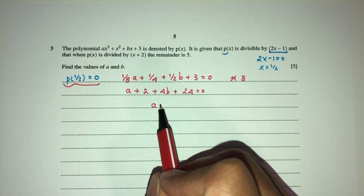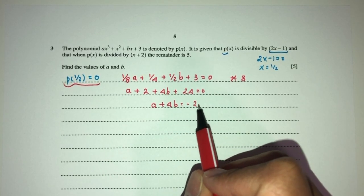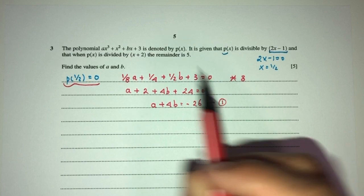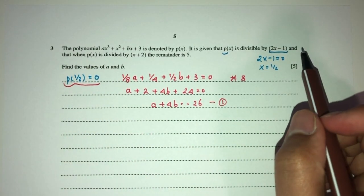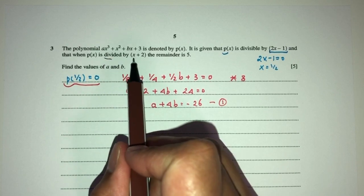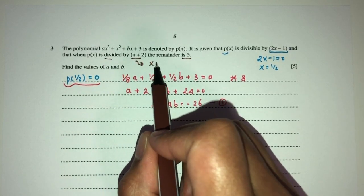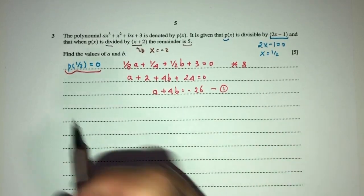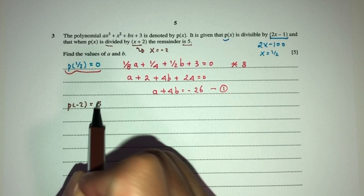So rearrange, a will be plus 4b has to be minus 26, number 1. Then number 2, we have what? And when p of x is divided by this one, the remainder is 5. So for what value of x? x will be minus 2. So therefore I can say, well, when p takes in the value of minus 2, the remainder will be 5.